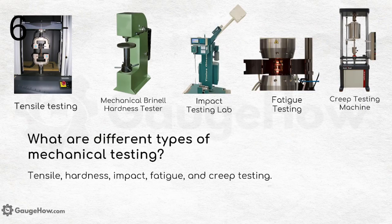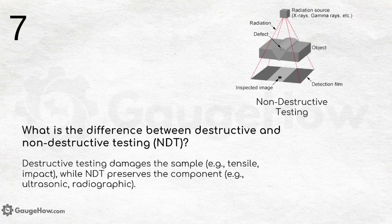What are the different types of mechanical testing? These include tensile testing, hardness testing, impact testing, fatigue testing, and creep testing. Figures showing each type of testing are provided for reference.